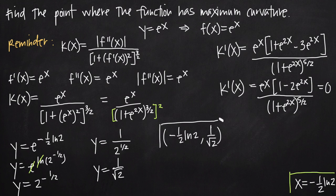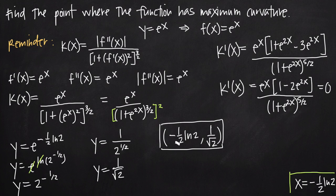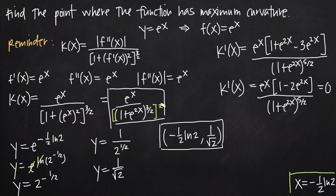That is our final answer. If we wanted to find the actual maximum curvature value itself, we could take this x value and plug it into our curvature function k of x to find the curvature at this point. But the coordinate point where maximum curvature occurs is negative 1 half ln of 2 comma 1 over root 2.